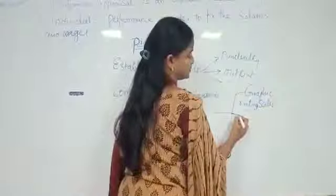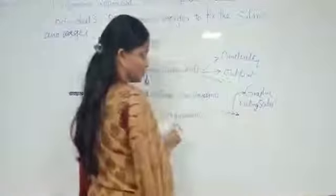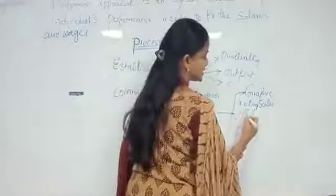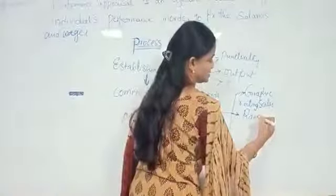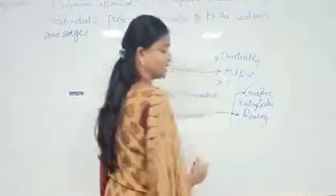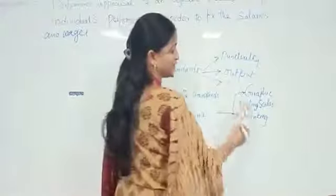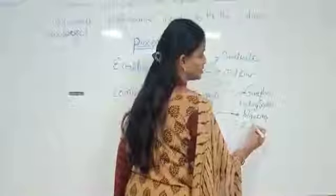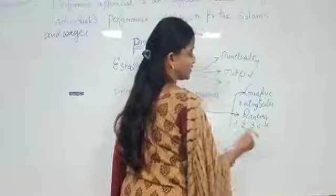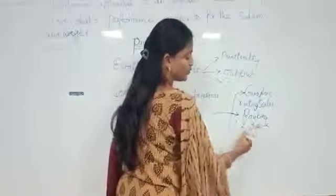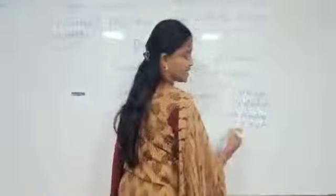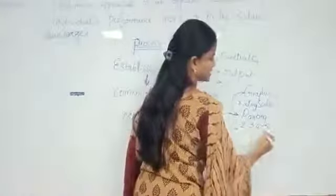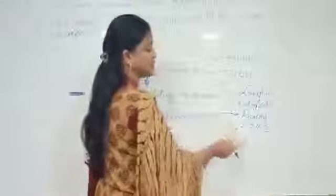Another method is the ranking method. Under this method, we take ranks from 1 to 5. Under this ranking, the 1st rank is the best rank and the 5th rank is the least rank — so it is just opposite to the rating scales.